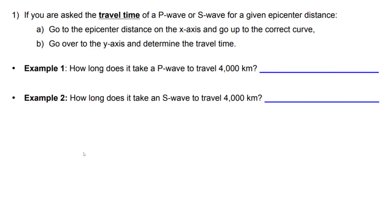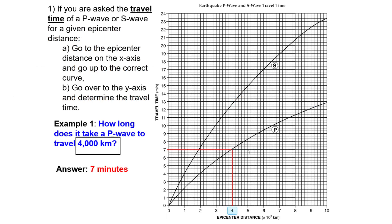Let's start with question one. If asked for the travel time of a P or S wave for a given epicenter distance, go to that distance on the x-axis and read across to the y-axis. Example 1: how long does it take a P wave to travel 4,000 kilometers? Starting at 4 on the x-axis, go up to the P wave curve, then left to the y-axis — it takes 7 minutes. Example 2: how long does it take an S wave to travel 4,000 kilometers? Starting at 4, go up to the S wave curve, then left — the answer is 12 minutes and 40 seconds.